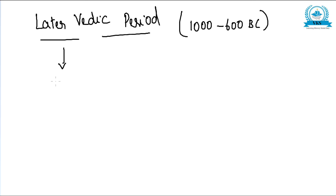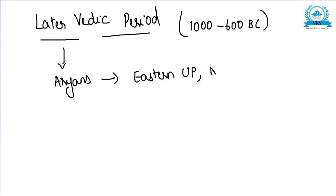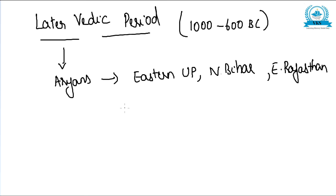During the Later Vedic period we see the expansion of Aryans to parts of eastern Uttar Pradesh, northern Bihar, and parts of eastern Rajasthan. The history of the Later Vedic period is mainly based on the Vedic texts.